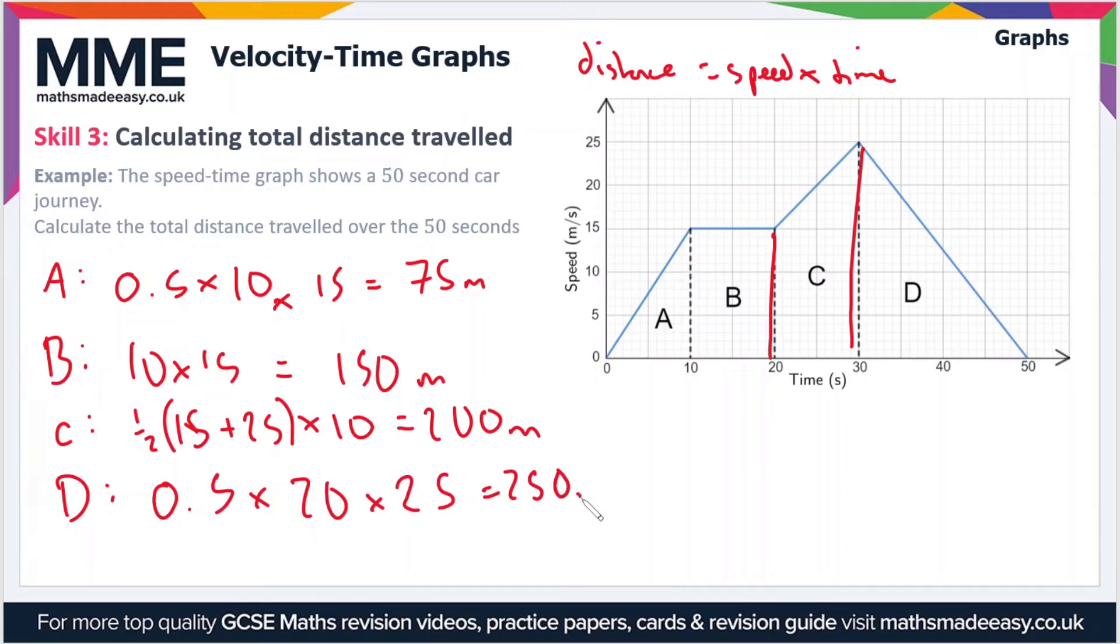So the total distance: we just add all of these together. We've got 75 plus 150 plus 200 plus 250. If you add all of those together, you should get a value of 675 meters in total.